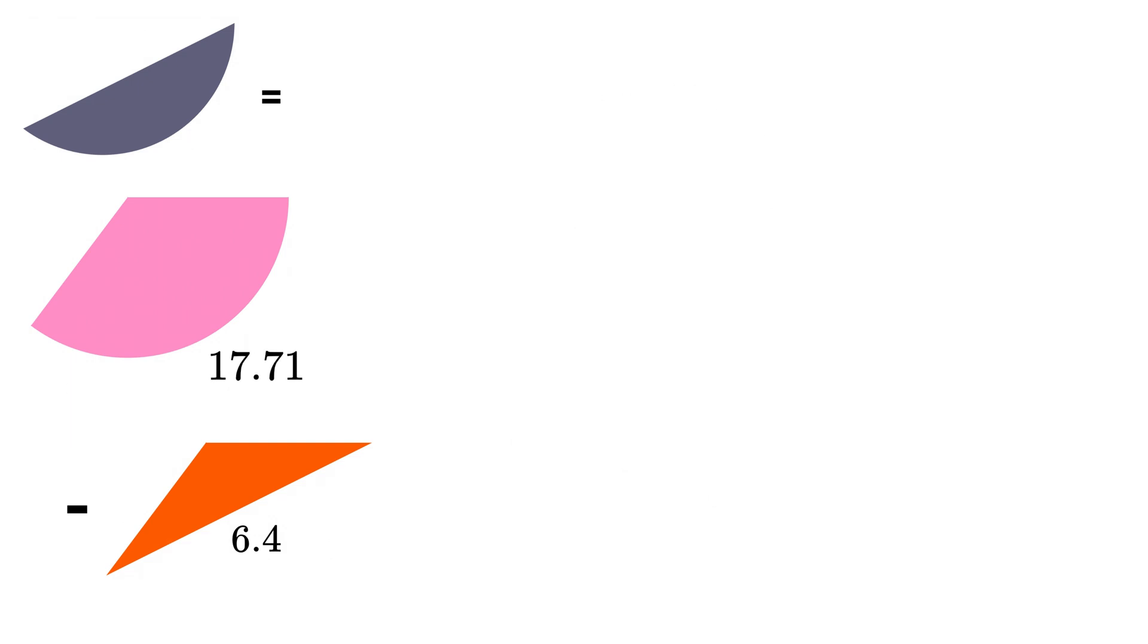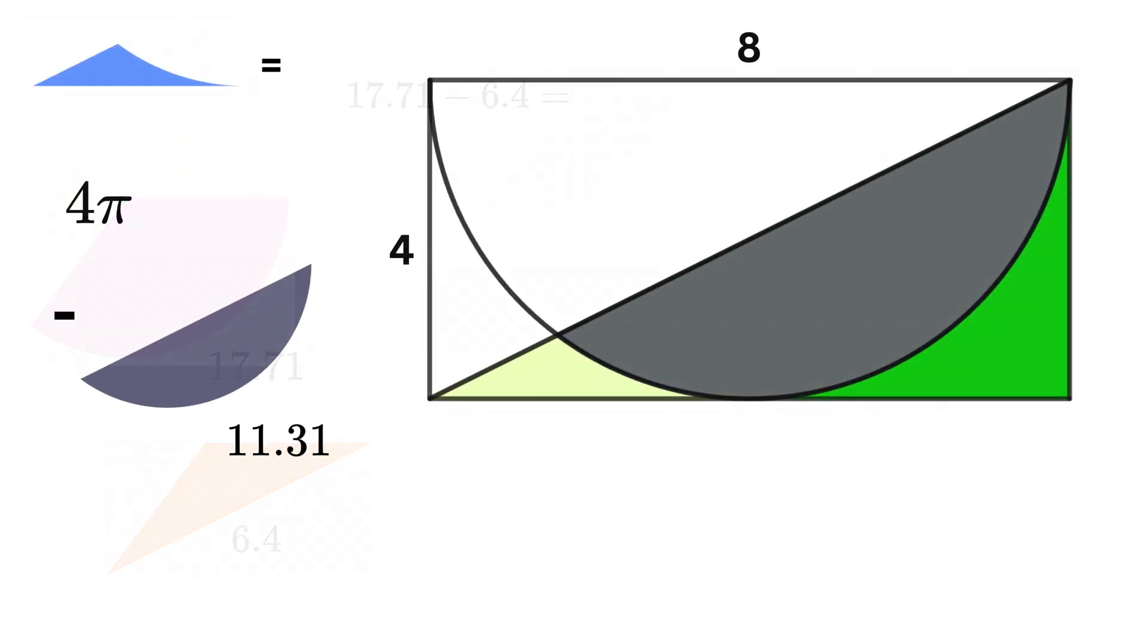So, the area of this circular section will be 17.71 minus 6.4, or 11.31. Therefore, our final answer will be 4π minus 11.31, or nearly 1.25.